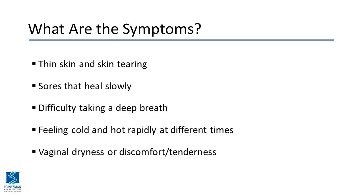Sores can develop and take a while to heal because of immune dysregulation, and steroids or immune suppression further delay wound healing. Patients with skin involvement around the chest and thorax may experience shortness of breath or difficulty breathing because deep sclerosis restricts lung expansion. Regulation of skin temperature can also be problematic, particularly for patients with diffuse erythematous graft-versus-host disease.